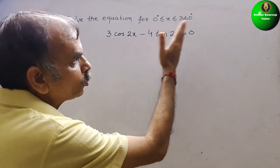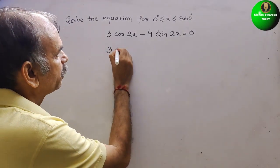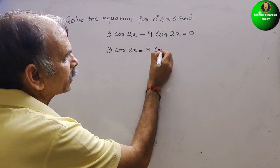Bring this sin to your right side. It will be 3 cos 2x is equal to 4 sin 2x.